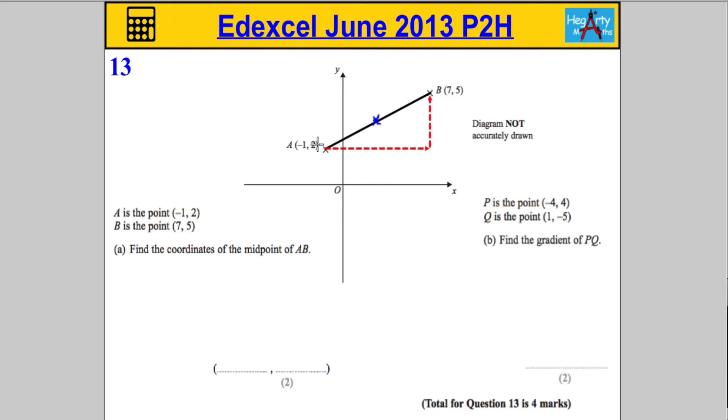If I think about it, the x-coordinate here is negative 1. The x-coordinate here is 7. So that means it must have travelled to the right 8 units.